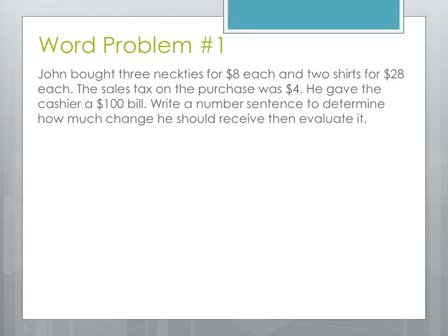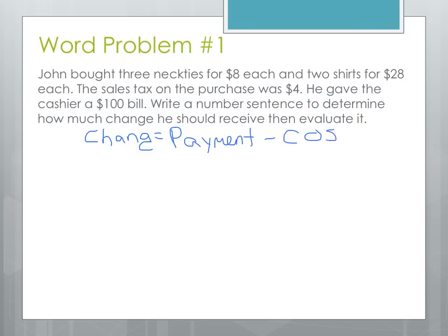Now it's time for a word problem. John bought three neckties for $8 each and two shirts for $28 each. The sales tax on the purchase was $4. He gave the cashier a $100 bill, and we need to write a number sentence to determine how much change he should receive, and then evaluate it to find out how much change he has. Here's how we're going to attack this. The change is going to equal what he paid — the payment — minus the cost.